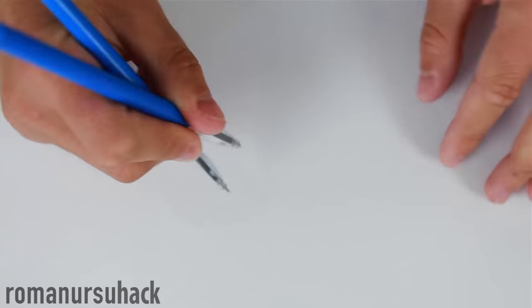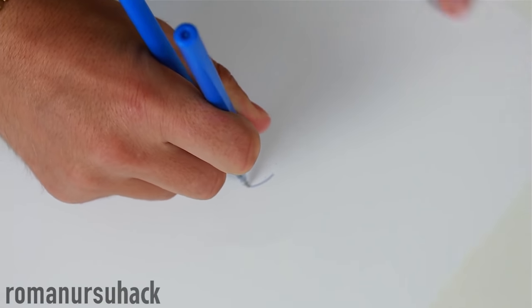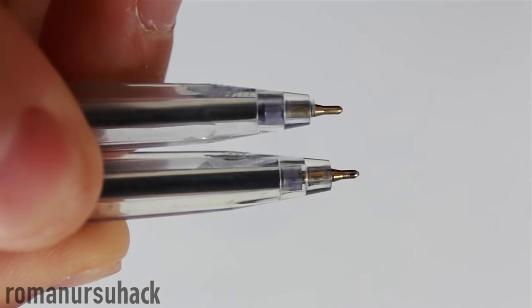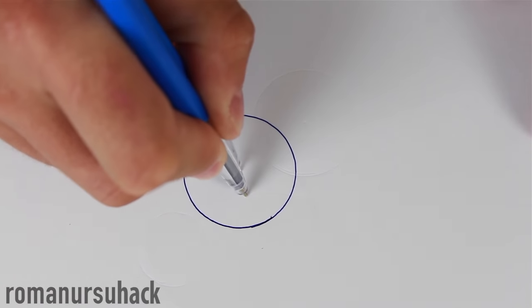So, in case if you forgot your geometry tools at home, it should not be a problem if you'll just take two pens or pencils and hold them as shown in the video. And you'll easily draw a circle.